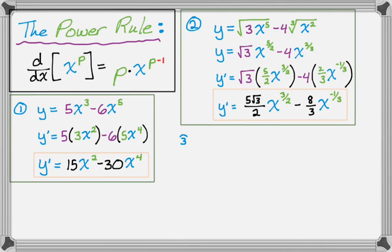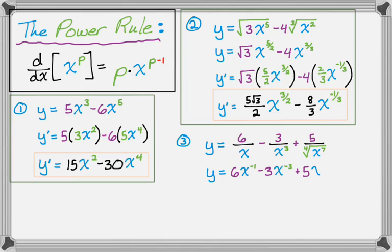And let's look at one more. So we've got y equals 6 over x minus 3 over x cubed plus 5 over the 4th root of x to the 7. Okay, so this doesn't look like power function, so we're going to rewrite it right away. So it's going to be 6x to the negative 1st minus 3x to the negative 3rd plus 5x to the negative 7 4ths.